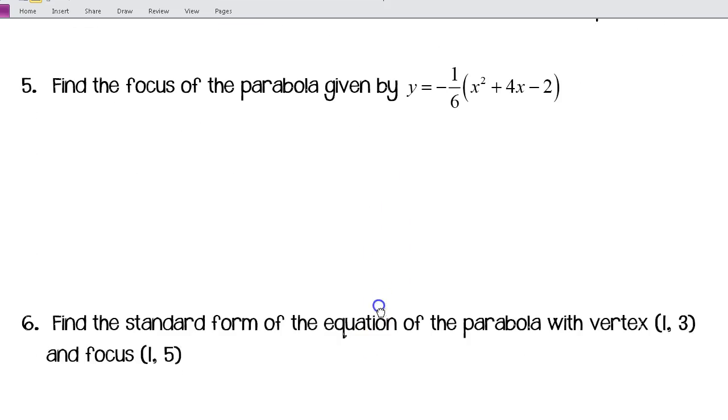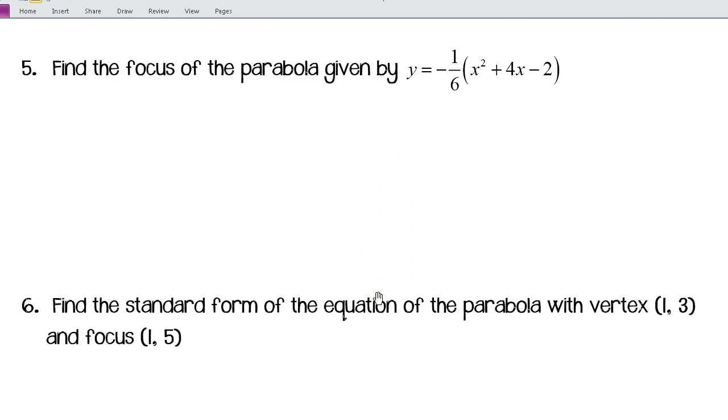Moving on to the next example. We want to find the focus of the parabola given by y equals negative one-sixth times the quantity (x squared plus 4x minus 2). We see that x is squared here, so we're going to want to put it in the form (x - h) squared equals 4p times (y - k).